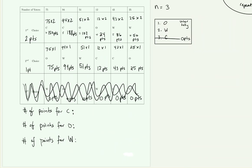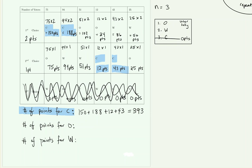Adding up all of California's points: 150 plus 188 from first-place votes, plus 12 and 14 from second-place votes, gives a total of 393 points for California. For Oregon, we highlight all Oregon-related point values.